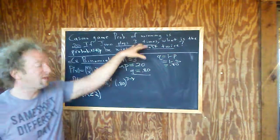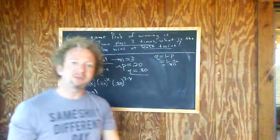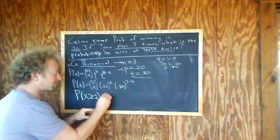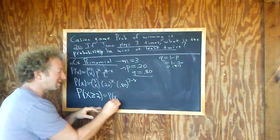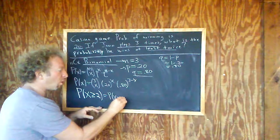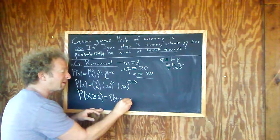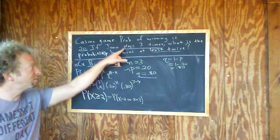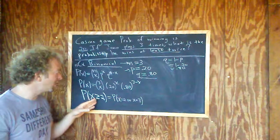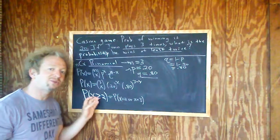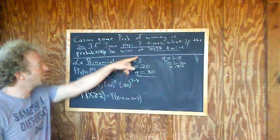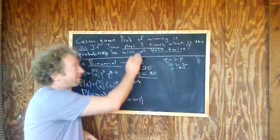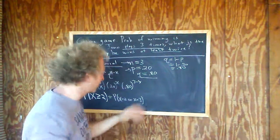Now, since he's only playing three times, if he wins two or more times, that's two or three times. So this is equal to the probability that X is equal to two or the probability that X is equal to three, right? Because he's only playing three times. So if he's going to win at least twice, that means two or more times. So two or three times. If he was playing four times, it would be two or three or four. If he was playing five times, it would be two or three or four or five, et cetera.